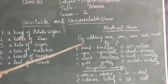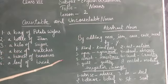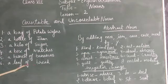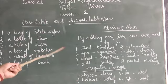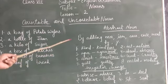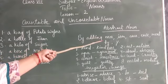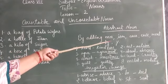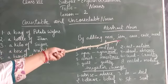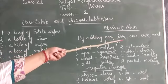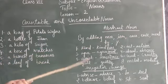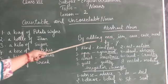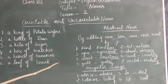Here one more thing: abstract nouns. We can form abstract nouns by adding some suffixes to a word. Like by adding -ness, -ion, -ment, -ence, -nce, or -ty/-y. By putting these suffixes we can make some abstract nouns.